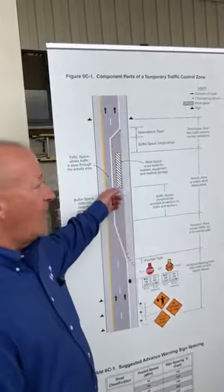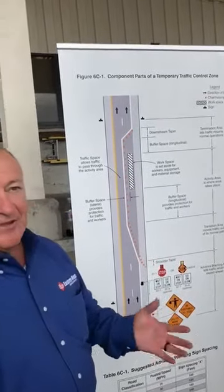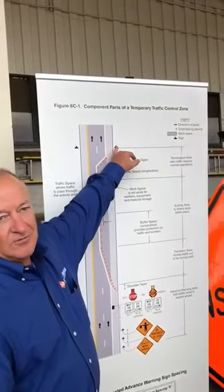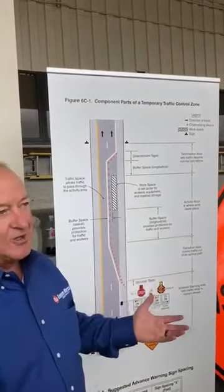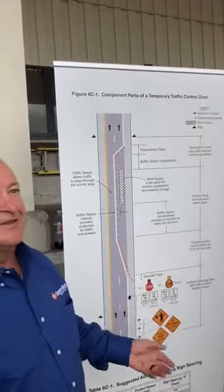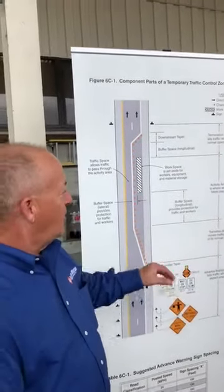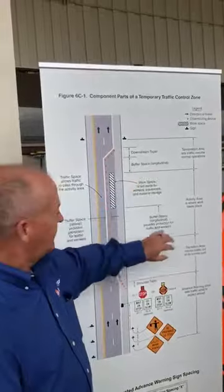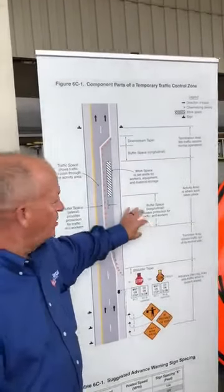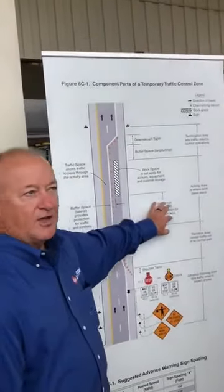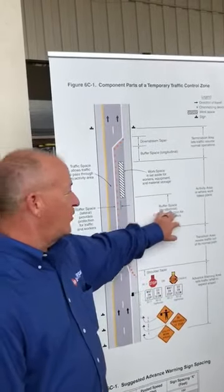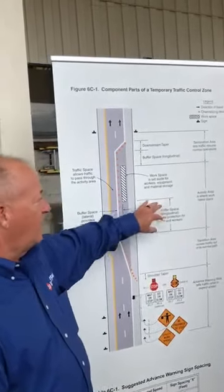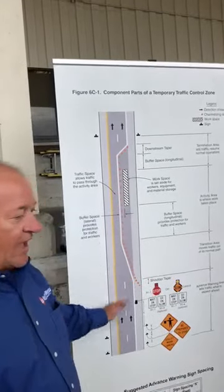At the very end you should have an 'end work zone' sign so drivers know they're out of the danger area and you guys are out of the way. One other important thing is there's a buffer space where nothing — trucks, equipment, people, nothing — should be in that zone, and that is to keep you guys safe.